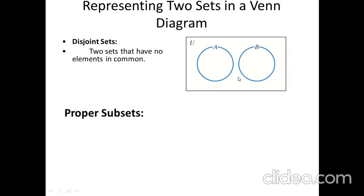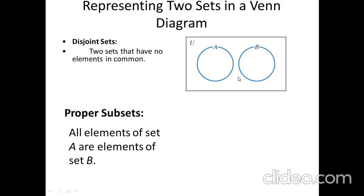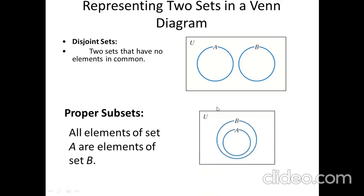For proper subsets: if all elements of set A are elements of set B and B has some extra elements, then A is a subset of B. In the Venn diagram, A is drawn inside B. At the same time, A and B are also subsets of the universal set. This Venn diagram shows that all elements of A are present in B, and all elements of B are present in the universal set.